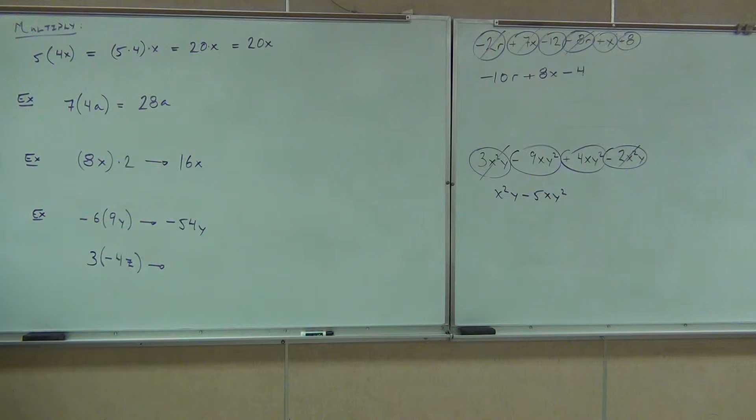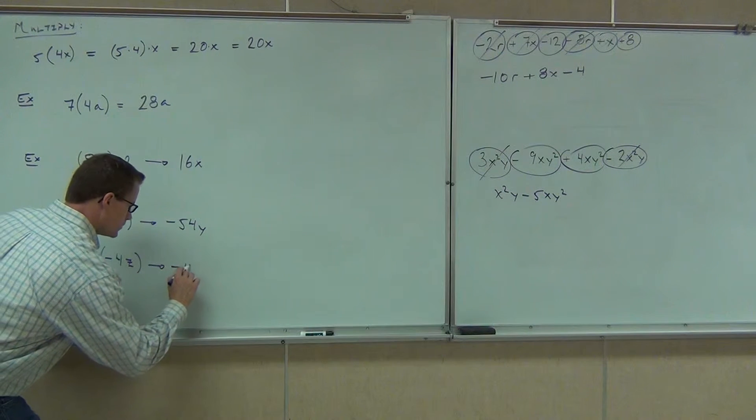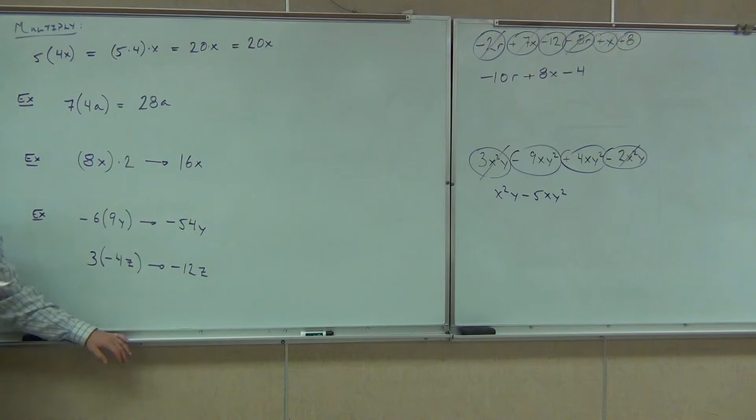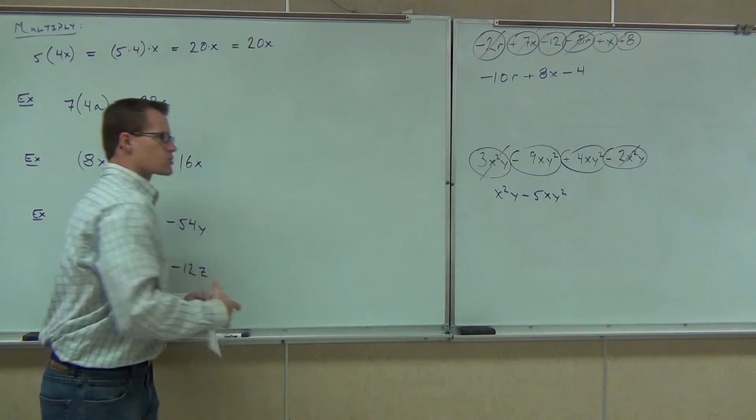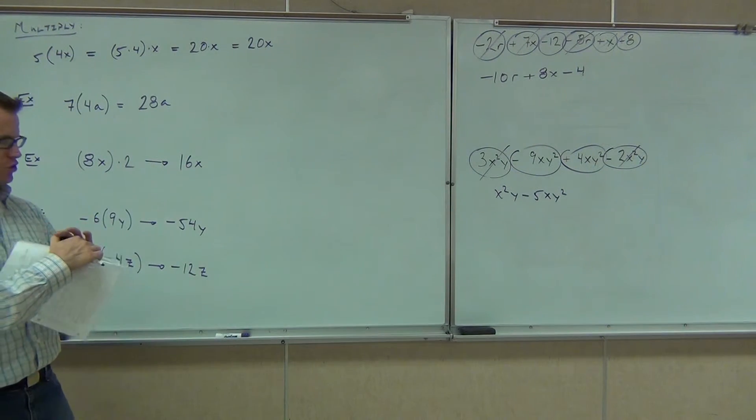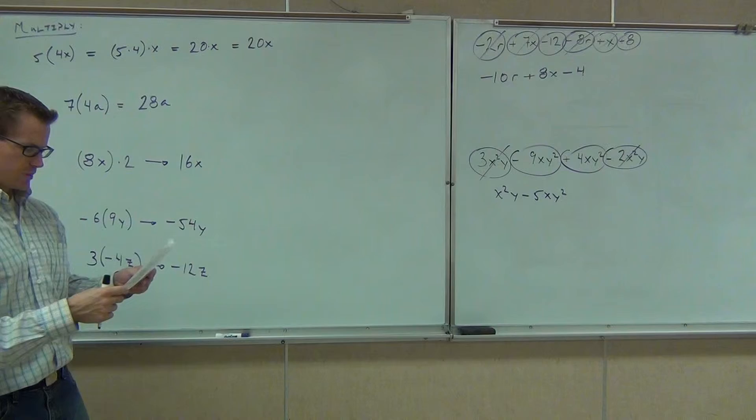You'd be really good at that, because the signs are what people mess up. Of course, we're going to have 54y. It's definitely going to be negative, because we have a negative times a positive. How about 3 times negative 4z? How much is that going to be? Negative 12z. Definitely have the negative though. Make sure we get that.